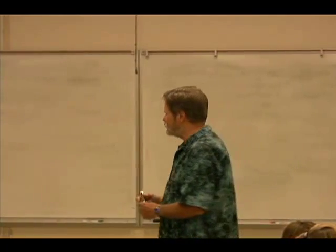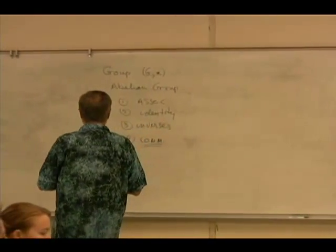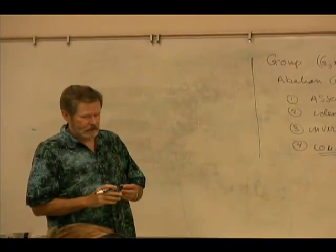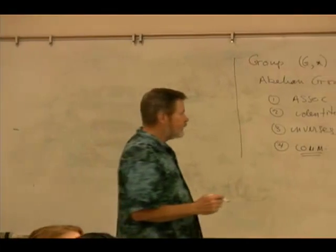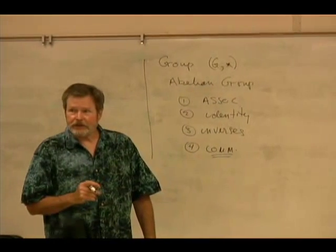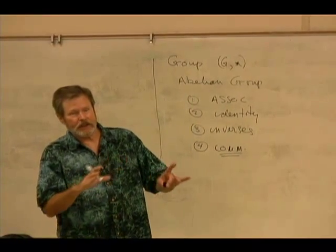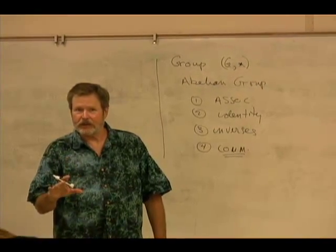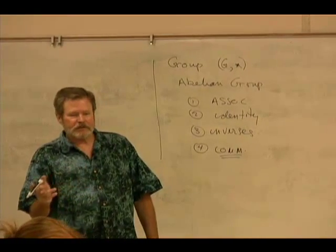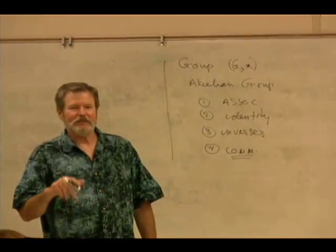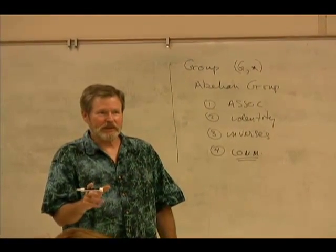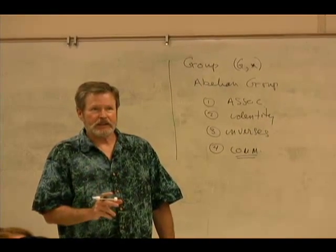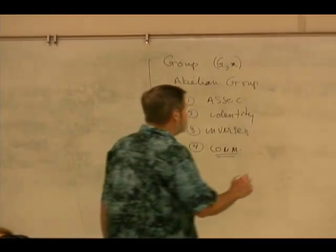We've never seen an example up to this point of a group where the operation doesn't commute. That is, A star B equals B star A for all A and B in the group. An example which we're not going to go into detail at this particular time, but you may be familiar with, are n by n matrices.